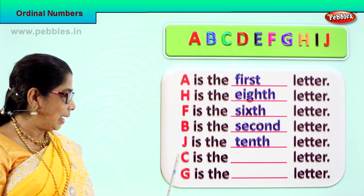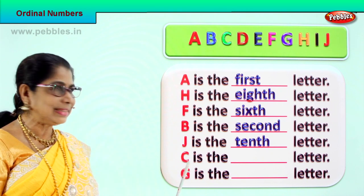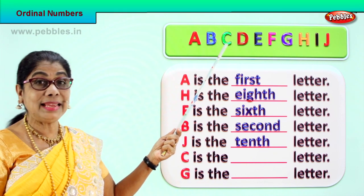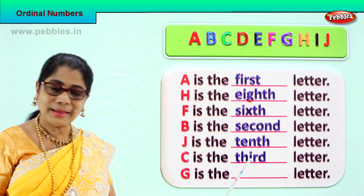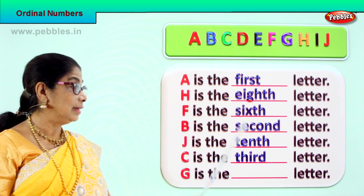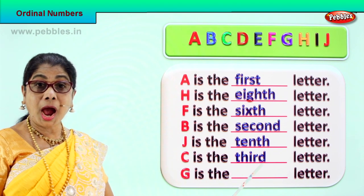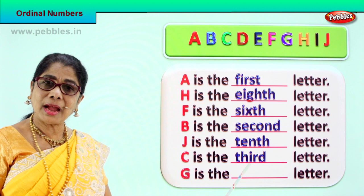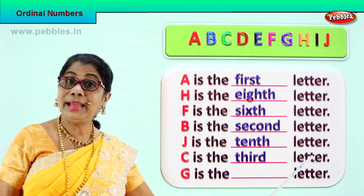Let's look at letter C. First is A, B is second, C is third. Spell third: T, H, I, R, D — third. C is the third letter.